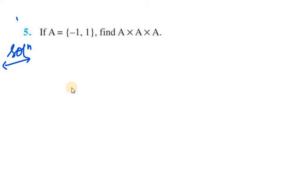Let's start with question number 5 of exercise 2.1. It says if A equals {-1, 1}, we need to find A cross A cross A. First of all we need to find A cross A. So it will have 4 elements in it.